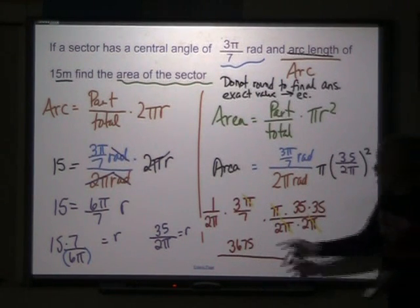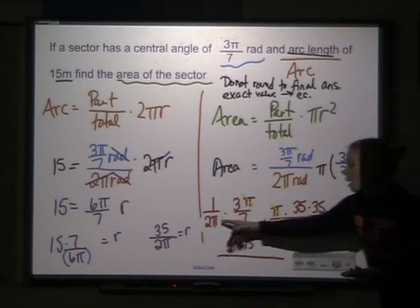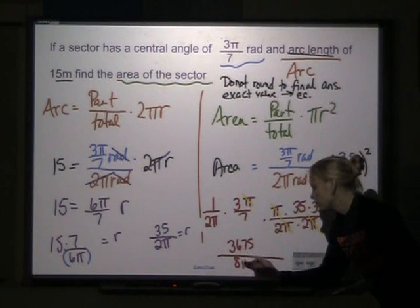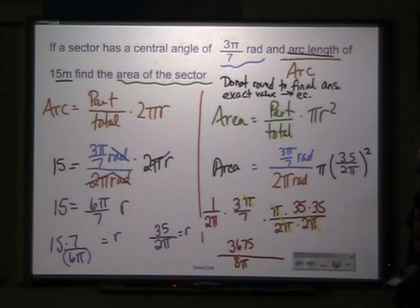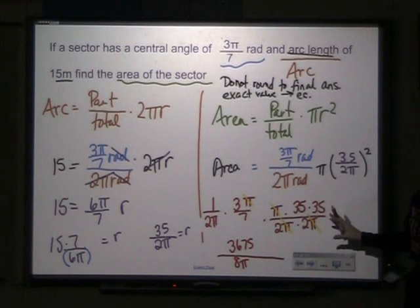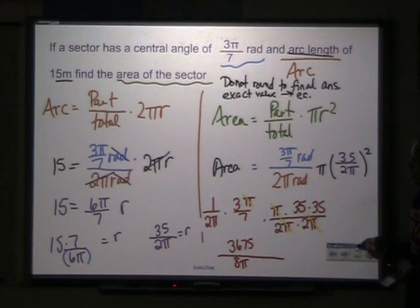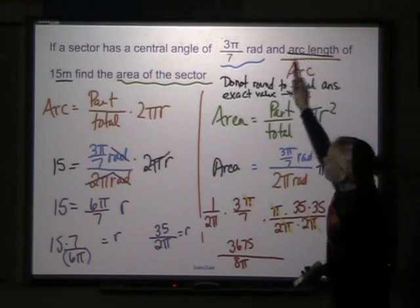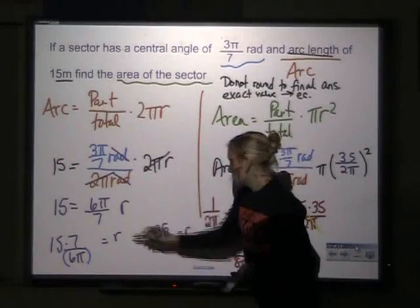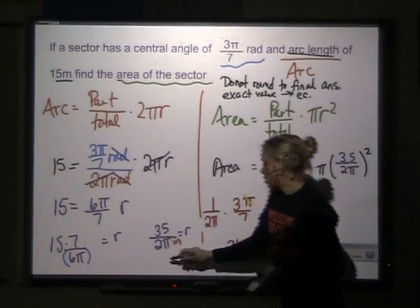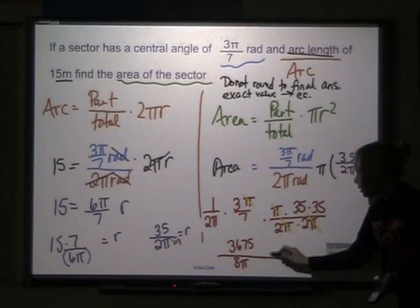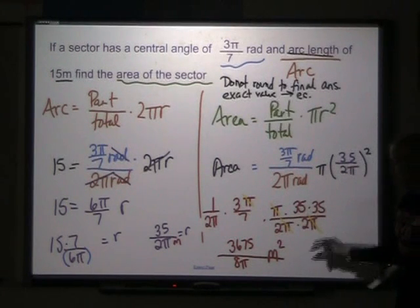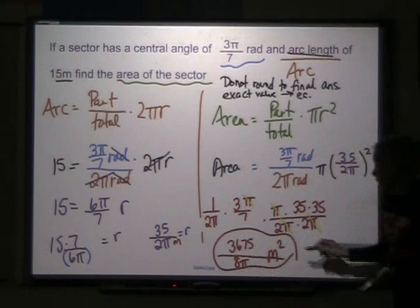So I'm going to have 3 times 35 times 35, which is 3,675. And on the bottom, I'm going to have 2 times 2 times 2 times π. And what is this measure going to be in? It's area, so it's squared. My radius was in meters. So this is going to be meters squared. And that would be my final answer.